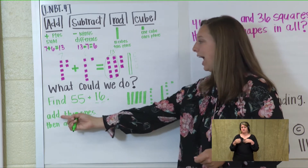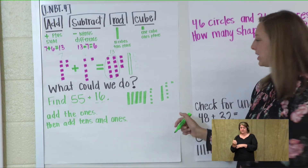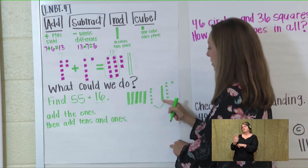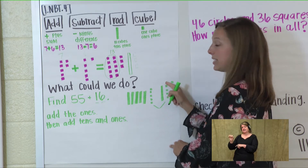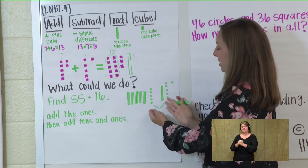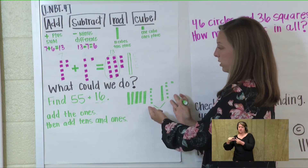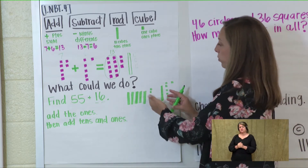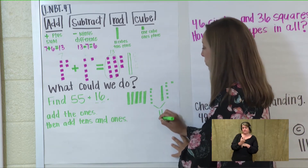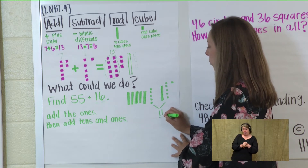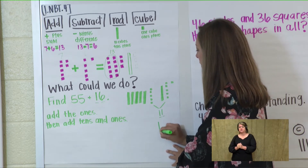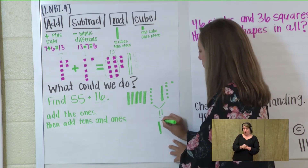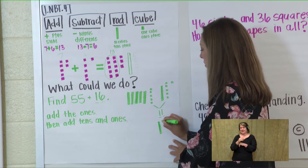Our direction says add the ones: 1, 2, 3, 4, 5, 6, 7, 8, 9, 10, 11. I have 11 cubes. How can I change that to make it easier? We know with the number 11 we would have one rod and one cube. So here's our rod — it equals 10 — and a cube for the number 11.